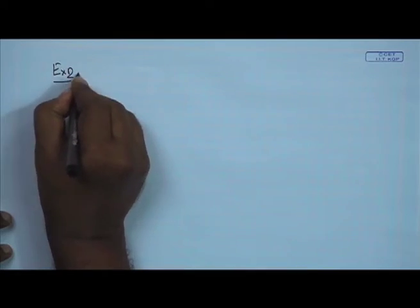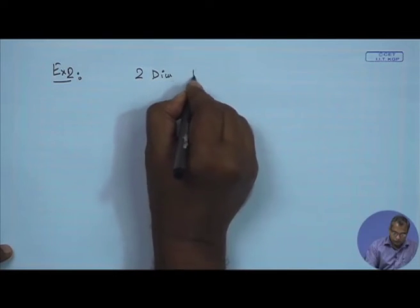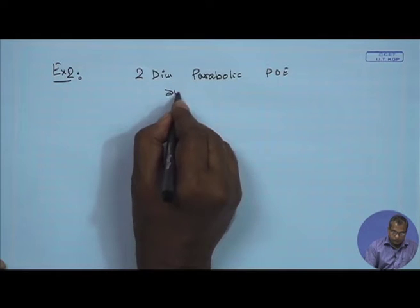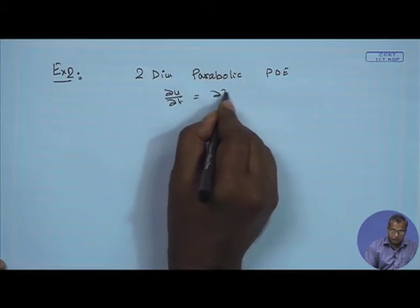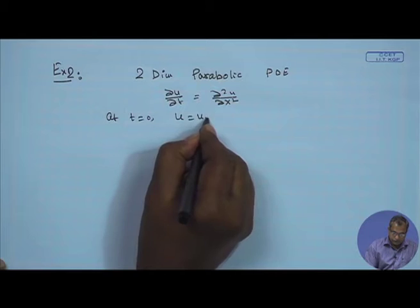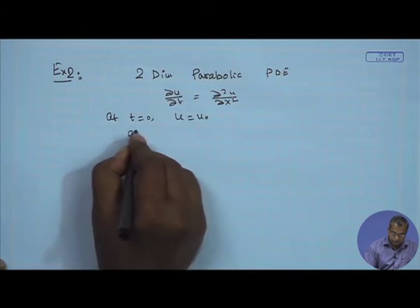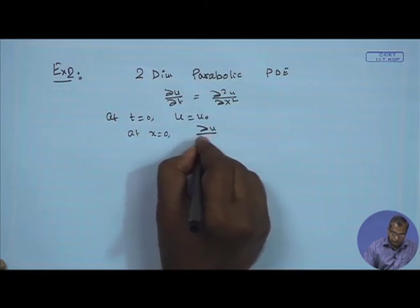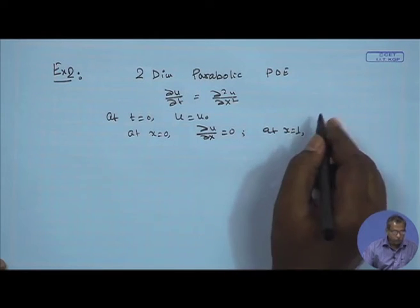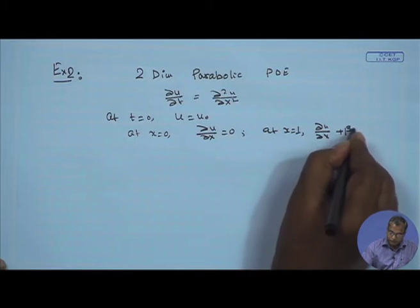I will now take up a typical problem we have not talked about earlier. This is a two-dimensional parabolic partial differential equation: del u / del t = del² u / del x². At t equal to 0 we have u equal to u_naught, and the boundary at x equal to 0 is insulated, so del u / del x equals 0.